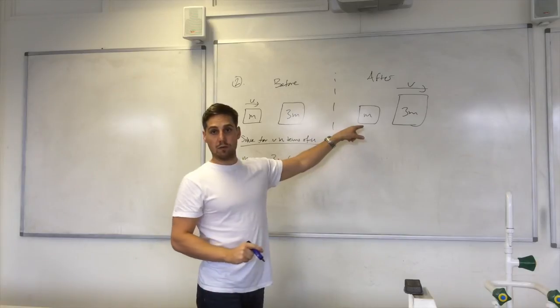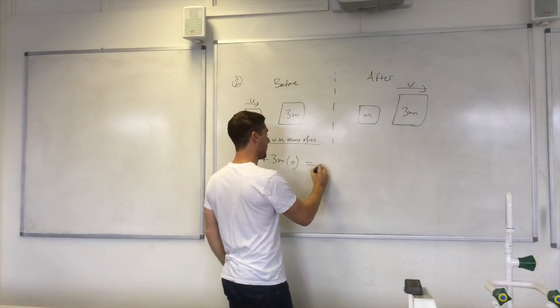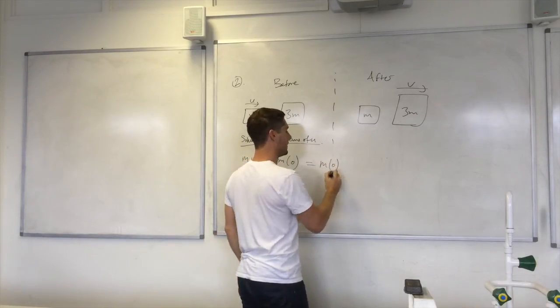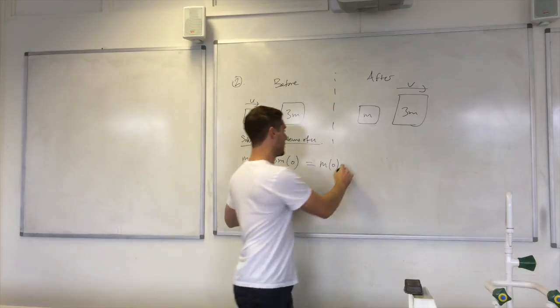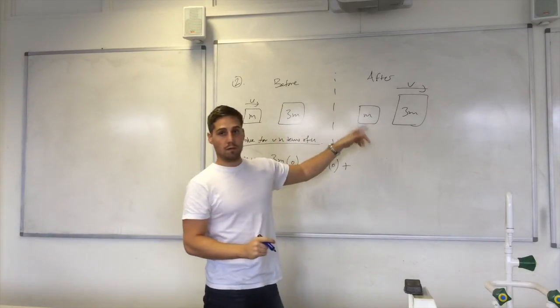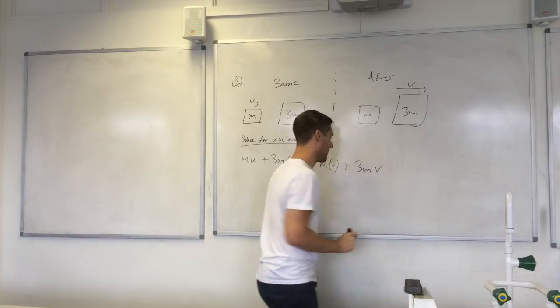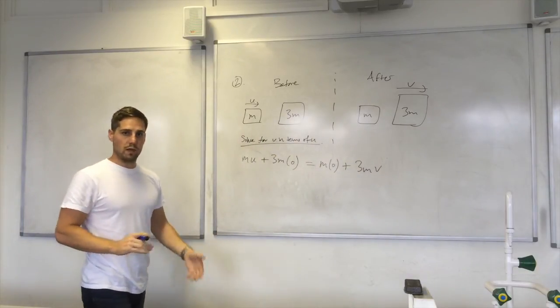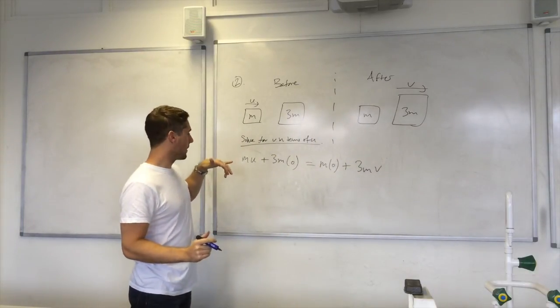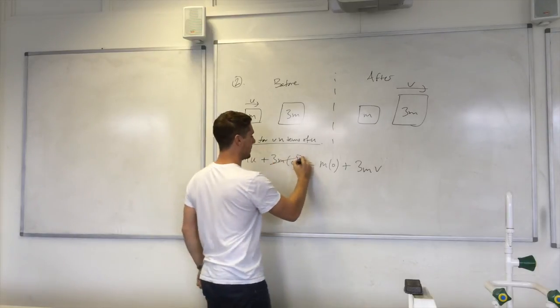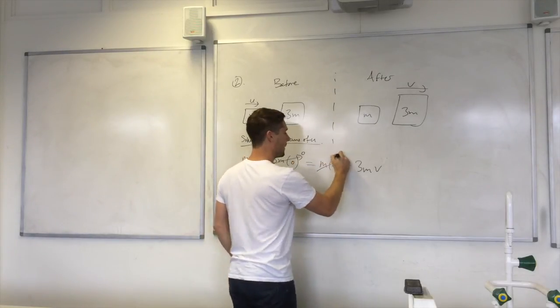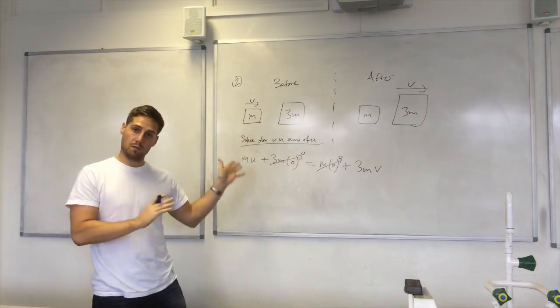And that's equal to the total momentum after. So that's m times 0 plus 3m times v. And then we can cancel these two terms out here. Those are both equal to 0, similar to the first example, which has 0 velocities there.